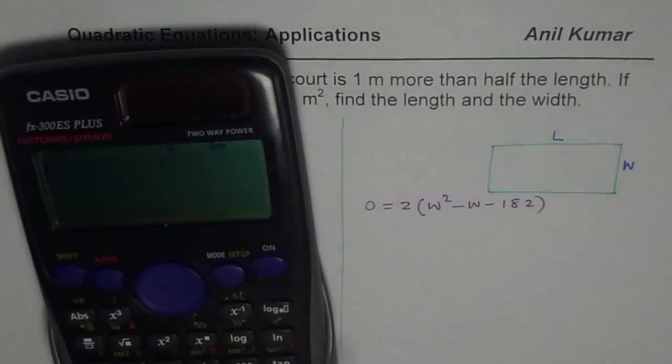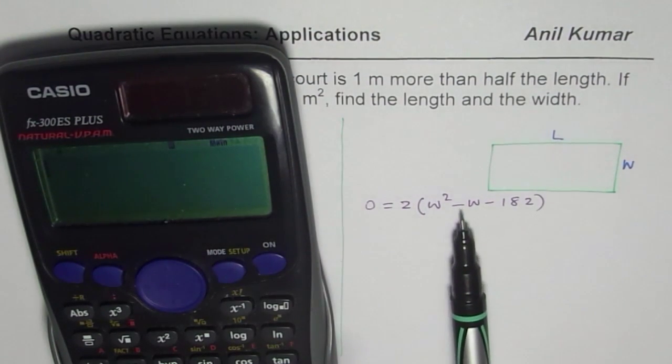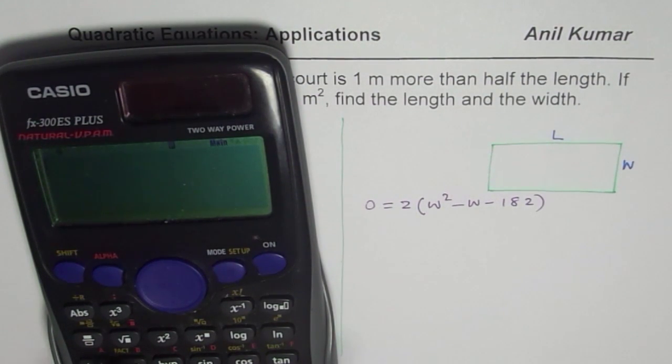182 is a big number, but we need 2 values which are very close by, since the difference is just 1. So let us find square root of 182. What do we get? Square root of 182 is 13 point something. So that means the numbers could be 13 and 14, right?